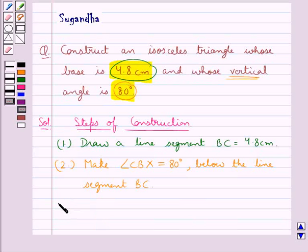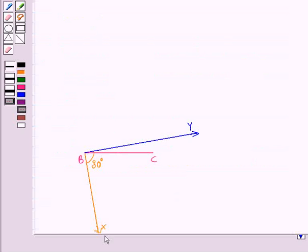Now in the next step we make angle XBY equal to 90 degrees. So this angle XBY is of measure 90 degrees.